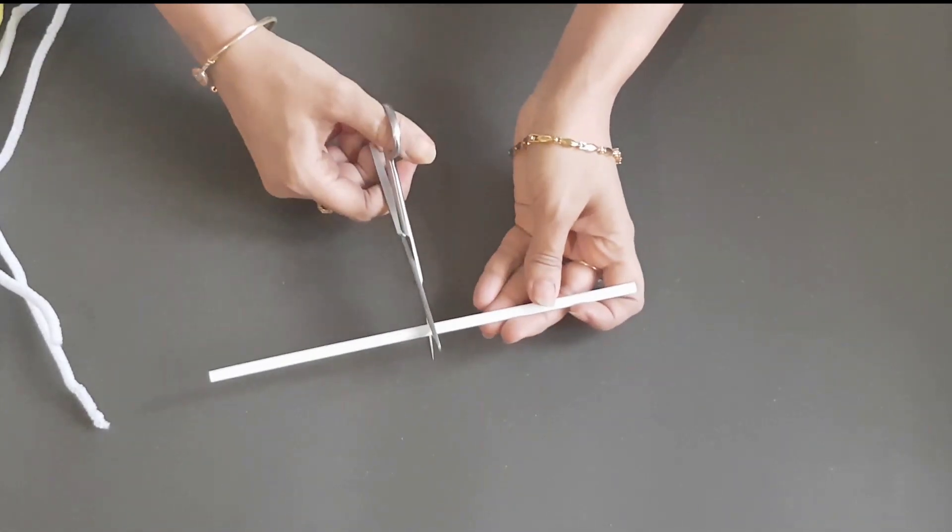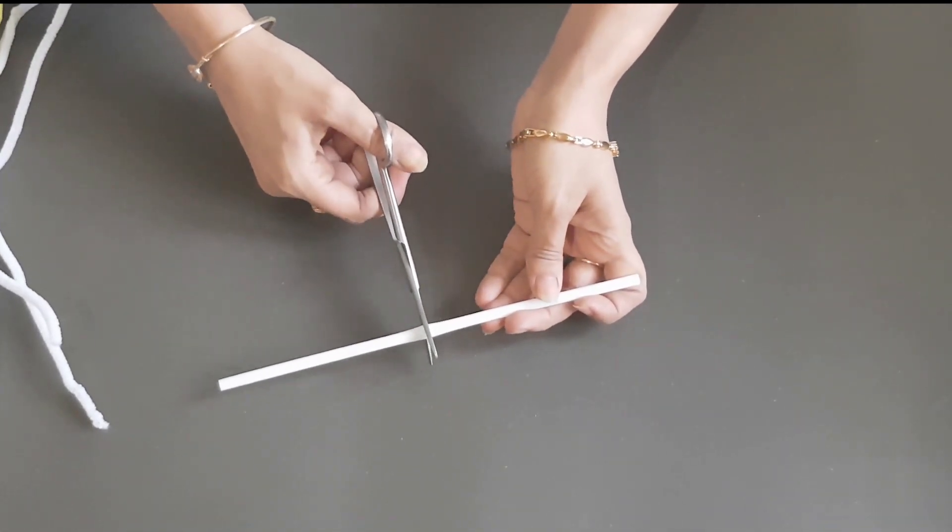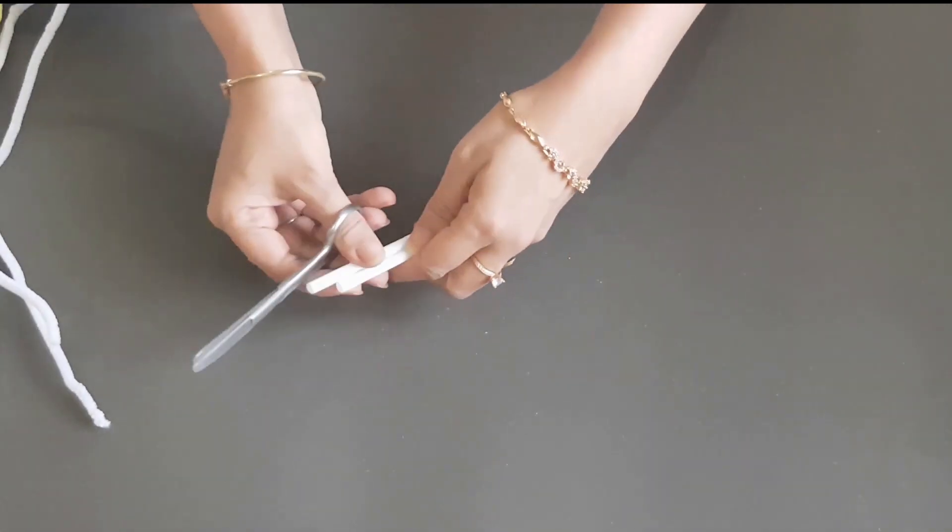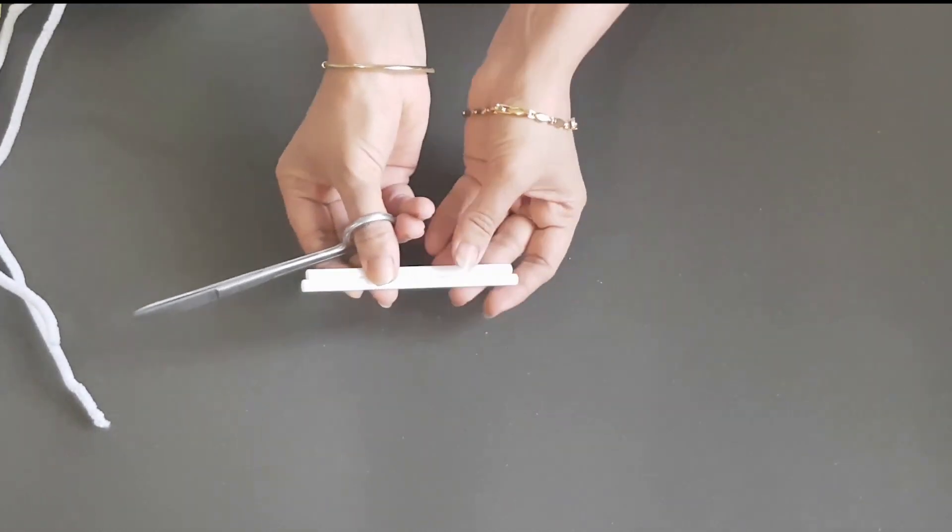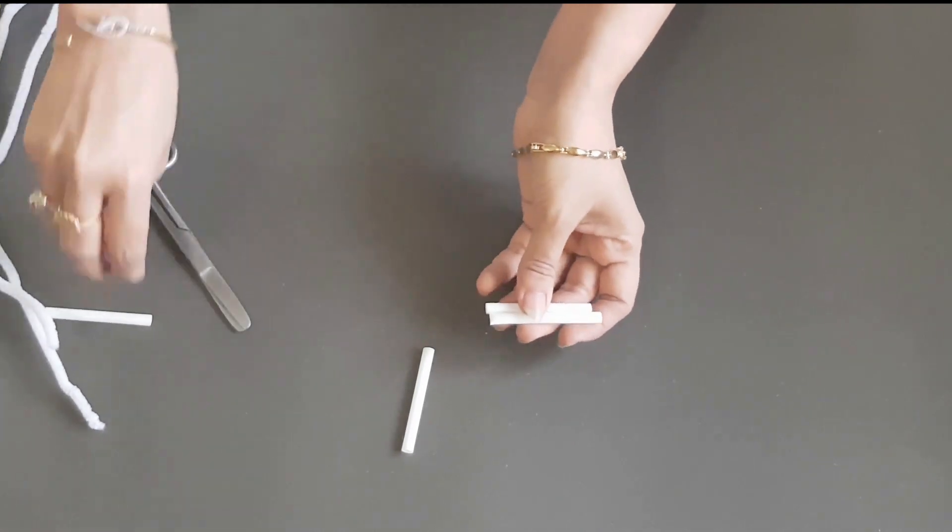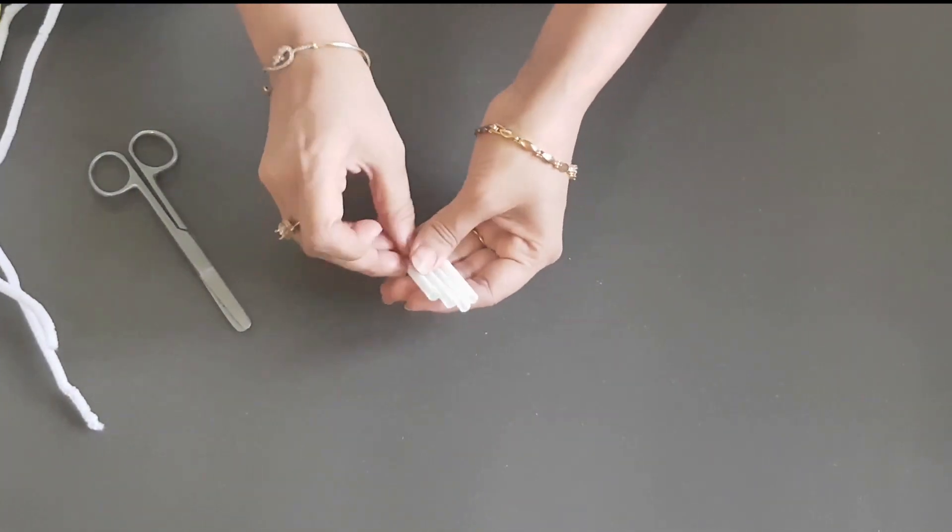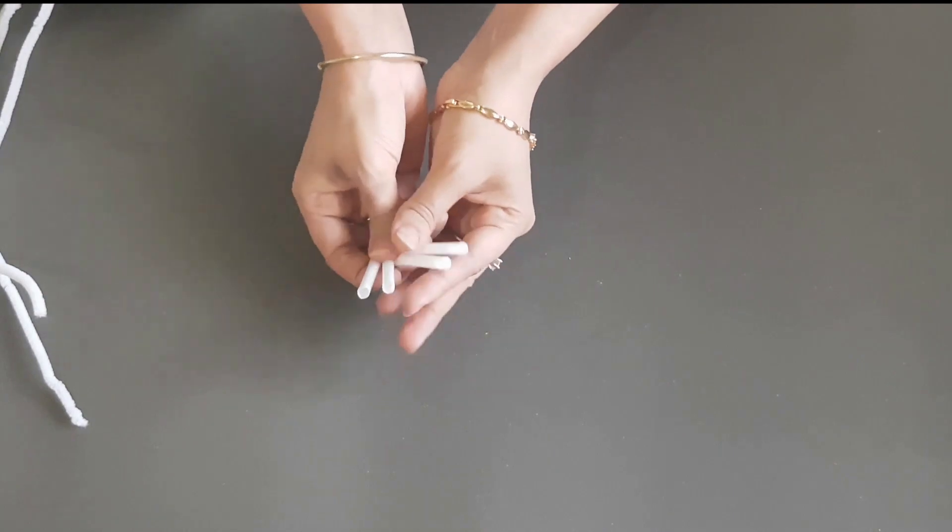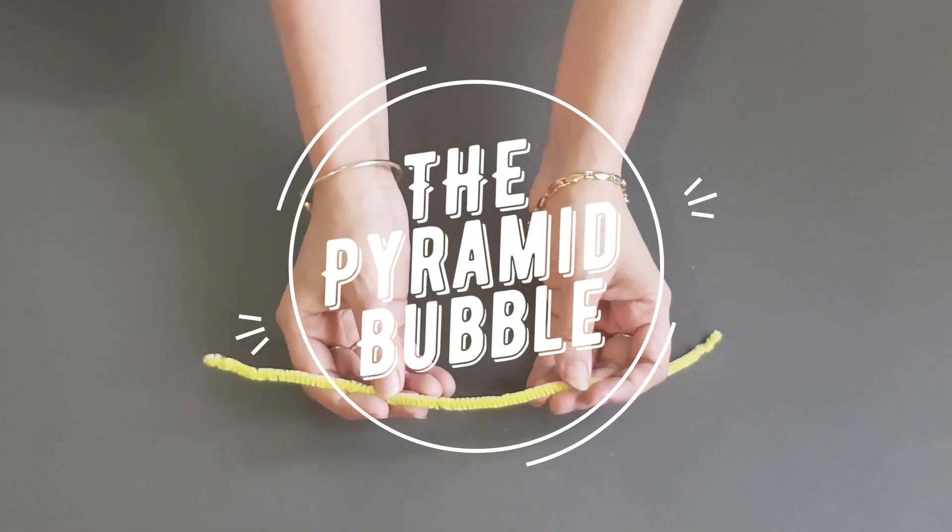You need to cut your straws into half and then again half. So you have four straws from one straw. Let's make a pyramid.